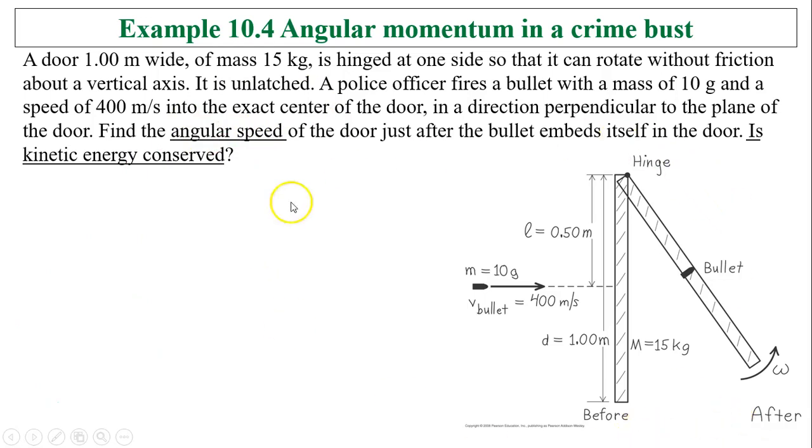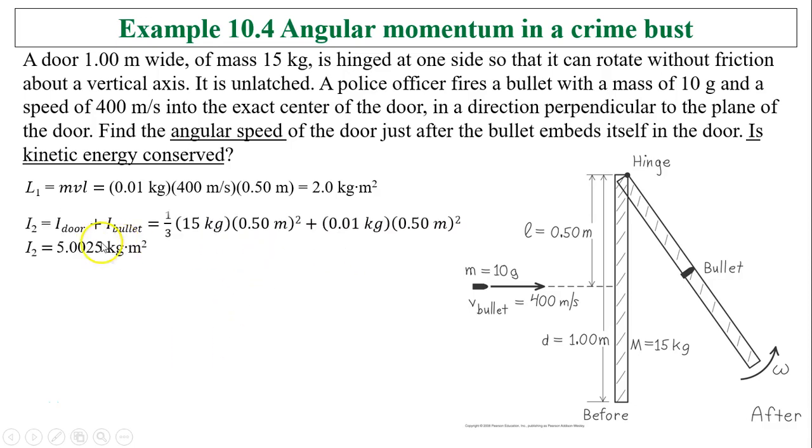To find angular speed, here is before, here is after. Before, L1 equals MVL because the door was at rest. The only angular momentum is from the bullet. The angular momentum of the particle is MVL. It's 10 grams, which is 0.01 kilograms times the speed times the lever arm. The lever arm is the distance, the vertical distance from the line of action to the point of rotation, which is 0.5 meters. So you get L1 equals 2 kilograms meter squared. I2 equals I door plus I bullet. I door equals one third because this is like a bar rotating at one end. One third ML squared, 15 times 0.5 squared, plus the bullet. The bullet is MR squared. So you have 5.0025 kilograms meter squared.